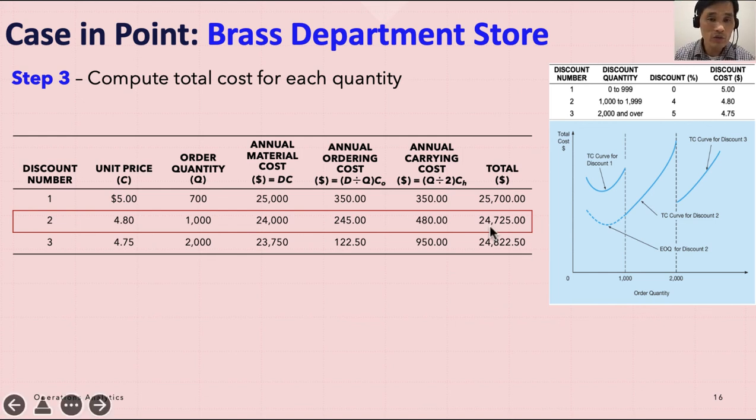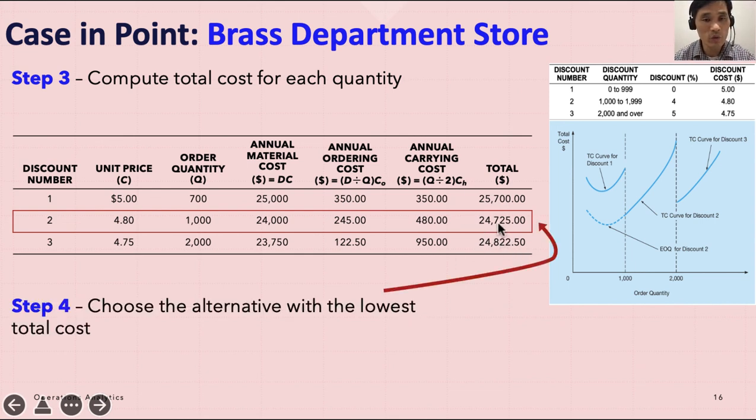The total cost is $24,725. Then we have the third model, and if you plug these numbers in, you will find that the total cost is $24,822.50. The lowest cost is actually $24,725, therefore your choice for the discount model is discount number two. So about 1,000 orders—when you are ordering, you want to order 1,000. That is lowering your cost the best. So that's how you can find the optimal value with the discount.